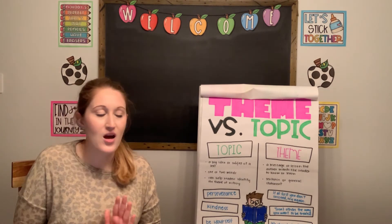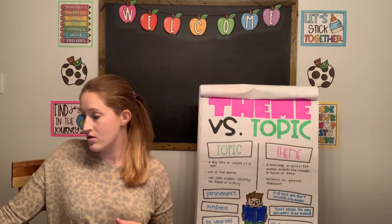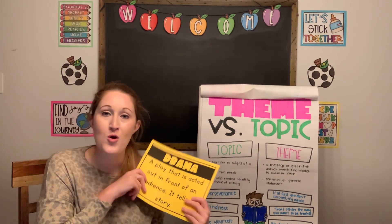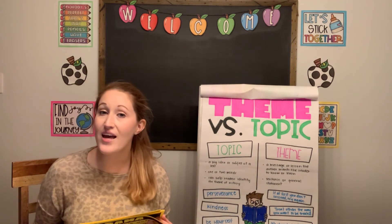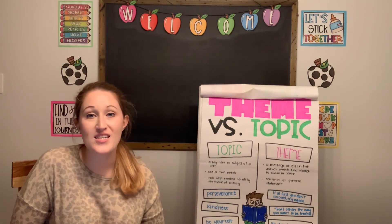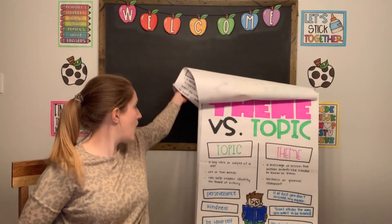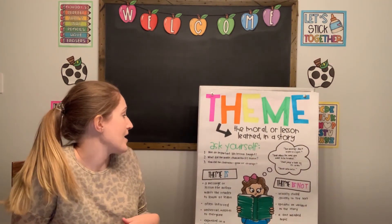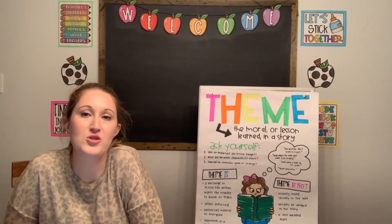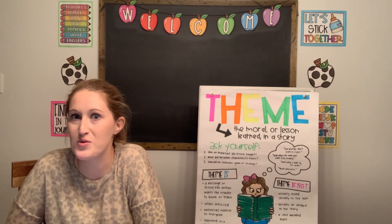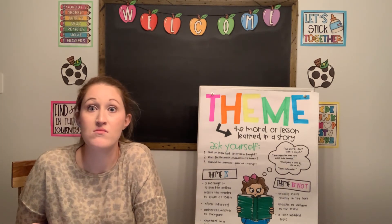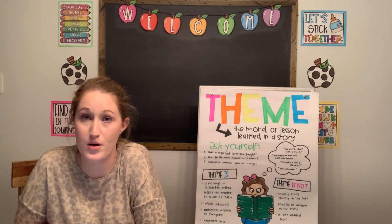Let's review what we talked about today. We reviewed our elements of a drama — we saw narrators, characters, and dialogue from a script. We also talked about theme: theme is the moral or lesson learned in a story. As we read our drama today, we were able to analyze it and figure out the theme. We can see quite often in dramas that they have themes — they were written for a reason. Everything is written with a purpose, and it's important to always think about why did the author write this.